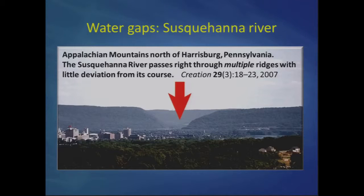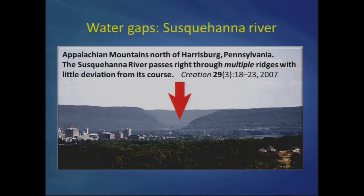Here's one more: a V-shaped water gap where the Susquehanna River cuts through the Appalachian Mountains in Pennsylvania near Harrisburg. As with planation surfaces, old-earth geologists have a problem explaining these water gaps. Those five different hypotheses used to explain them do not really satisfy. But I believe the flood is a powerful explanatory tool for explaining these features.